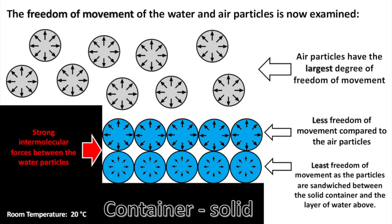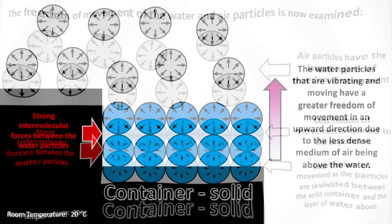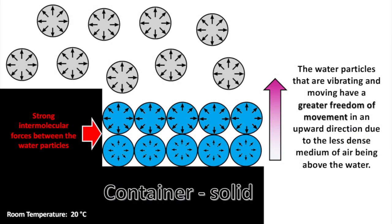The freedom of movement of the water and air particles is now examined. Air particles have the largest degree of freedom of movement. The water particles have strong intermolecular forces between them and have less freedom of movement compared to the air particles. The water at the bottom has the least freedom of movement as the particles are sandwiched between the solid container and the layer of water above. The water particles that are vibrating and moving have a greater freedom of movement in an upward direction due to the less dense medium of air being above the water.